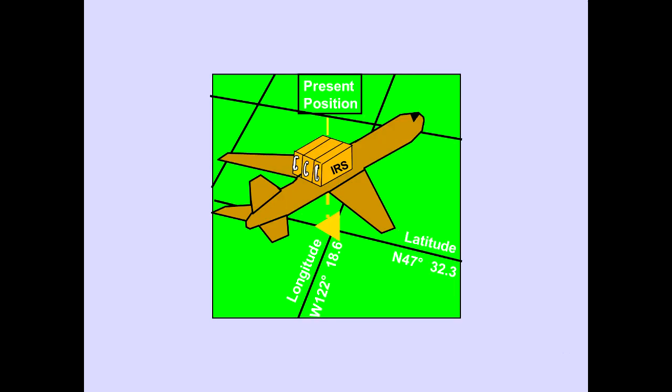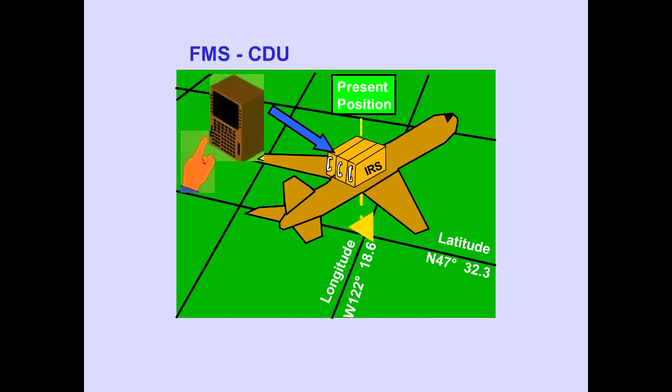Before the IRS can complete alignment, the airplane's present position must be entered. Present position is always described in degrees of latitude and longitude. Present position is entered through the FMS-CDU. This operation will be covered in flight management training.